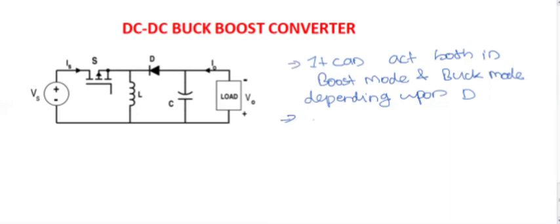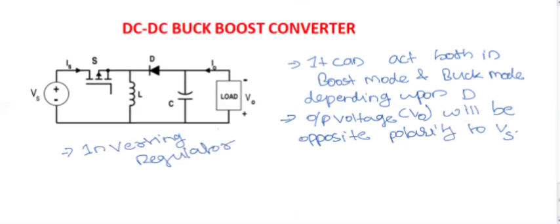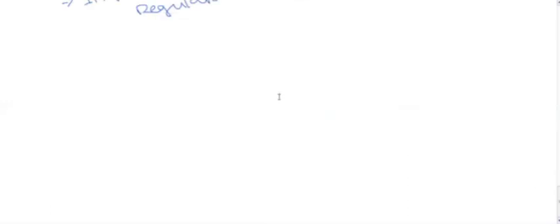Regarding the buck-boost converter, the output voltage V_out will be opposite in polarity to Vs, the source (input) voltage. So the buck-boost converter is also called an inverting regulator. Since it has both modes, it can increase the voltage as well as reduce the voltage.